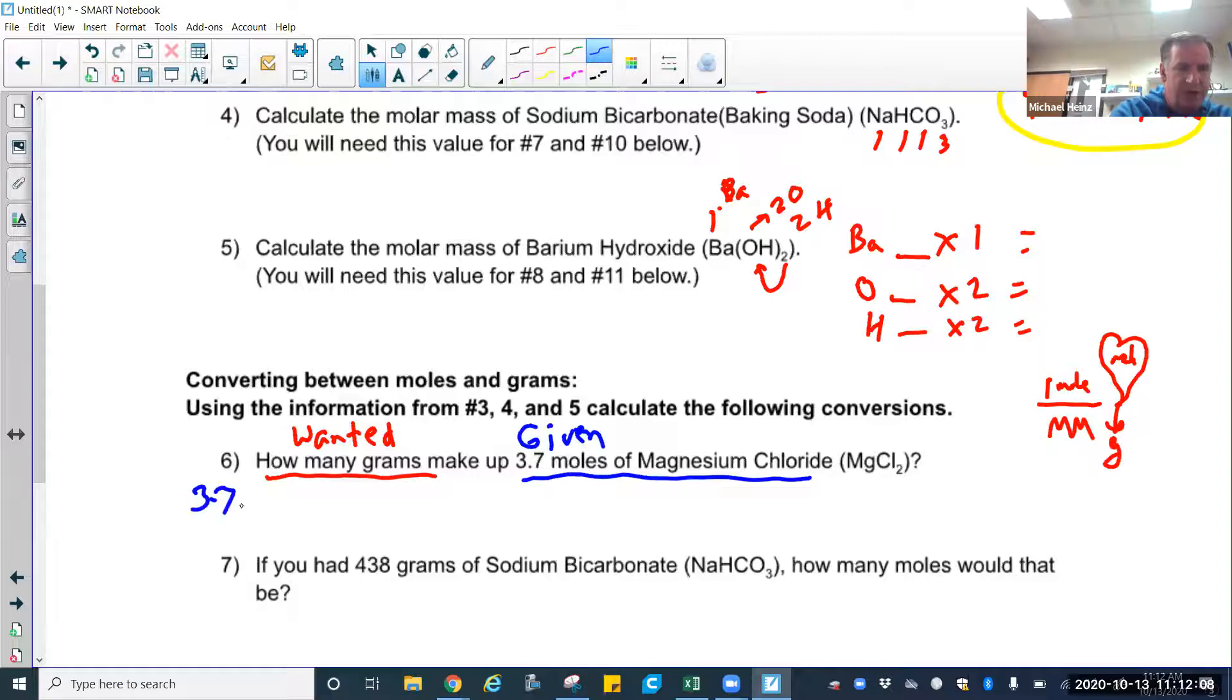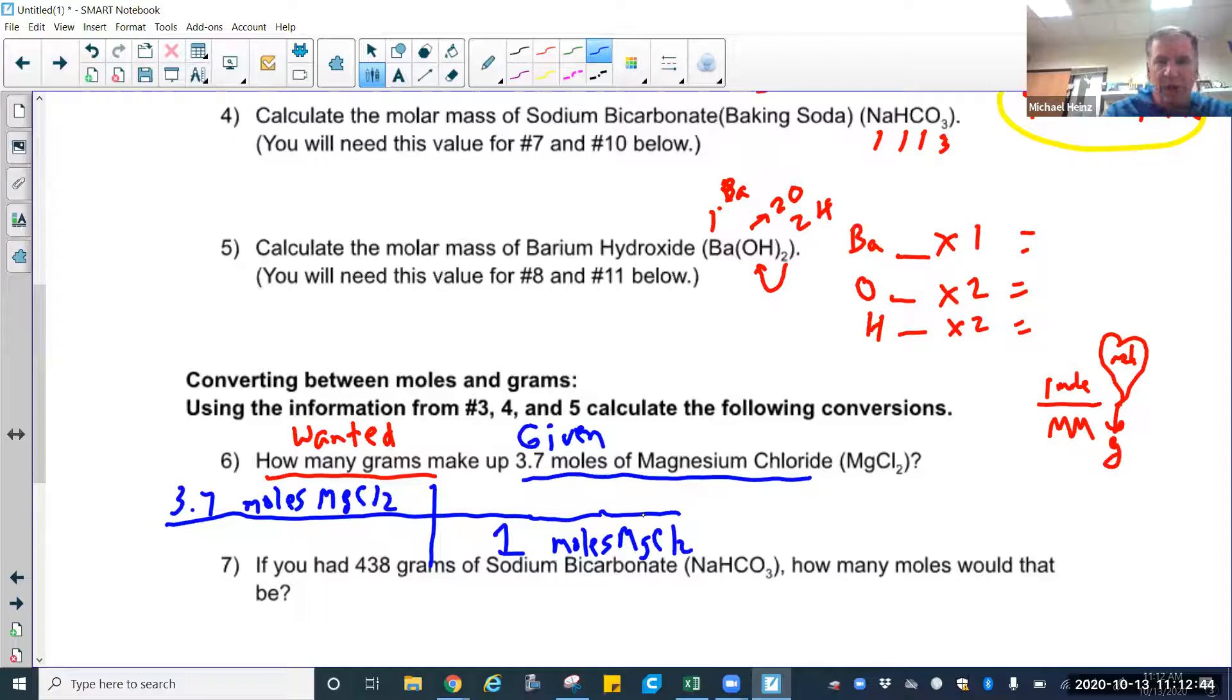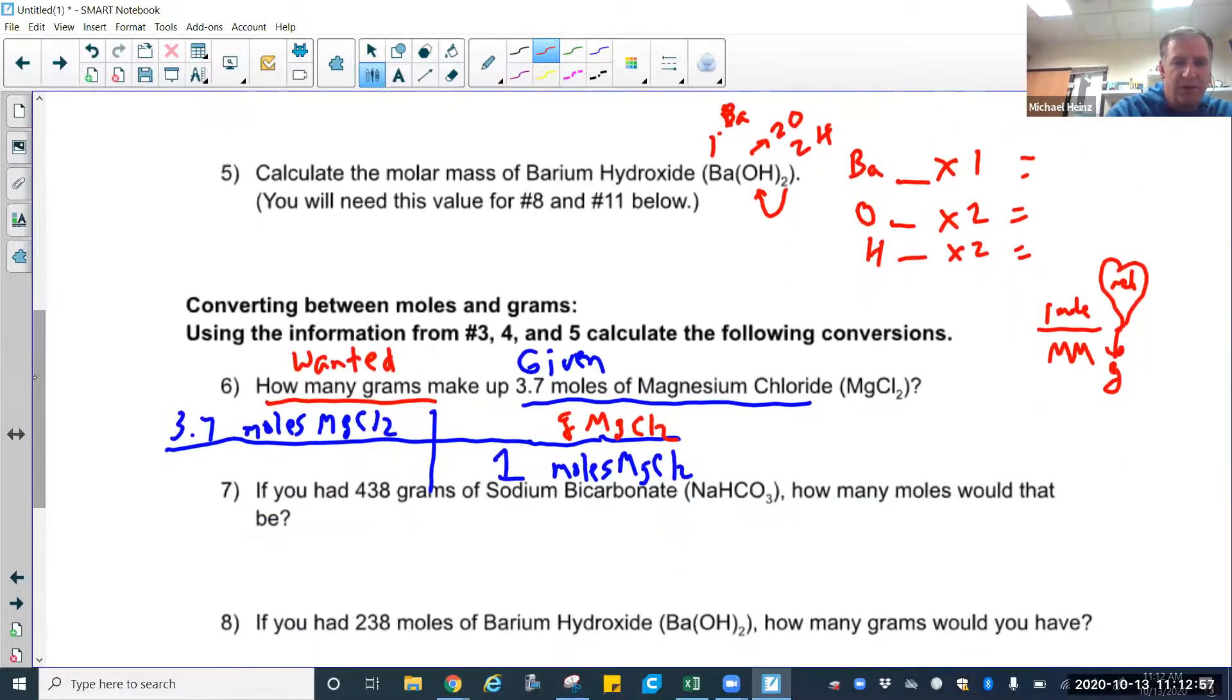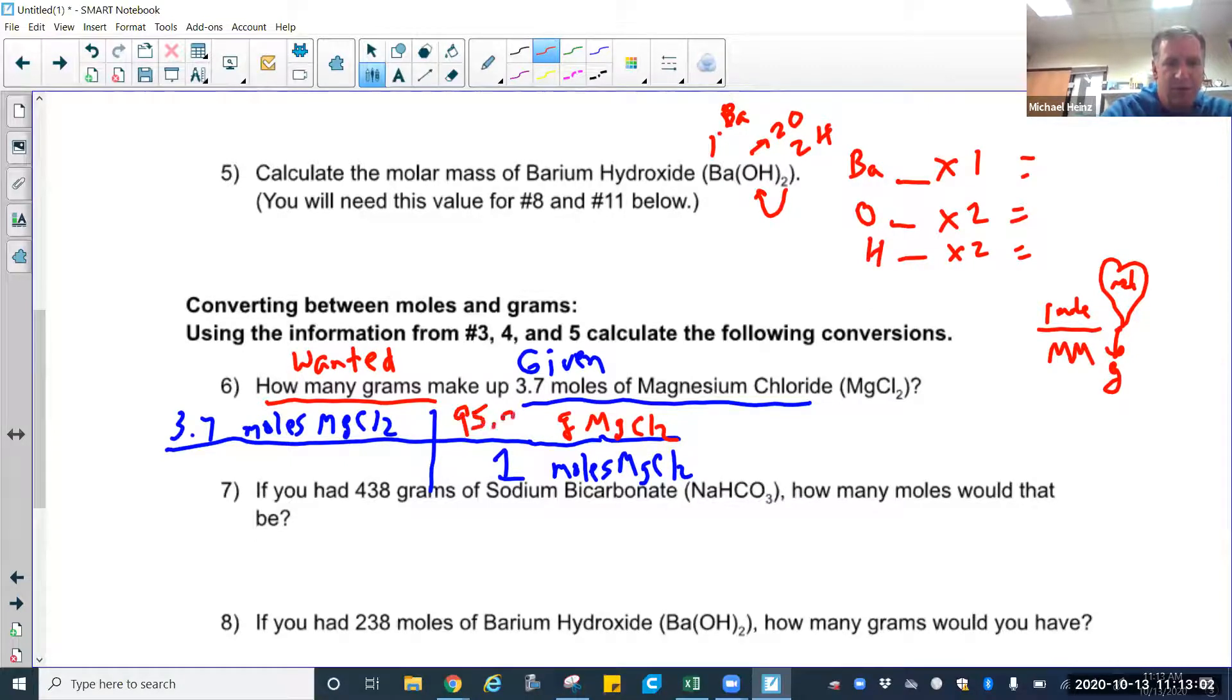Start with our given always - 3.7 moles of MgCl2. Make my bracket so I can figure out what comes next. Whatever's on top in the first fraction goes in the bottom of the second one. One goes with moles. MgCl2. Bring down our molar mass from what we calculated before because I need grams of MgCl2. What did I say it was? I think it's 95-ish, right? So 95.21 from up above in number 3. 95.21 grams. Multiply across the top, get an answer. Multiply across the bottom, get an answer.